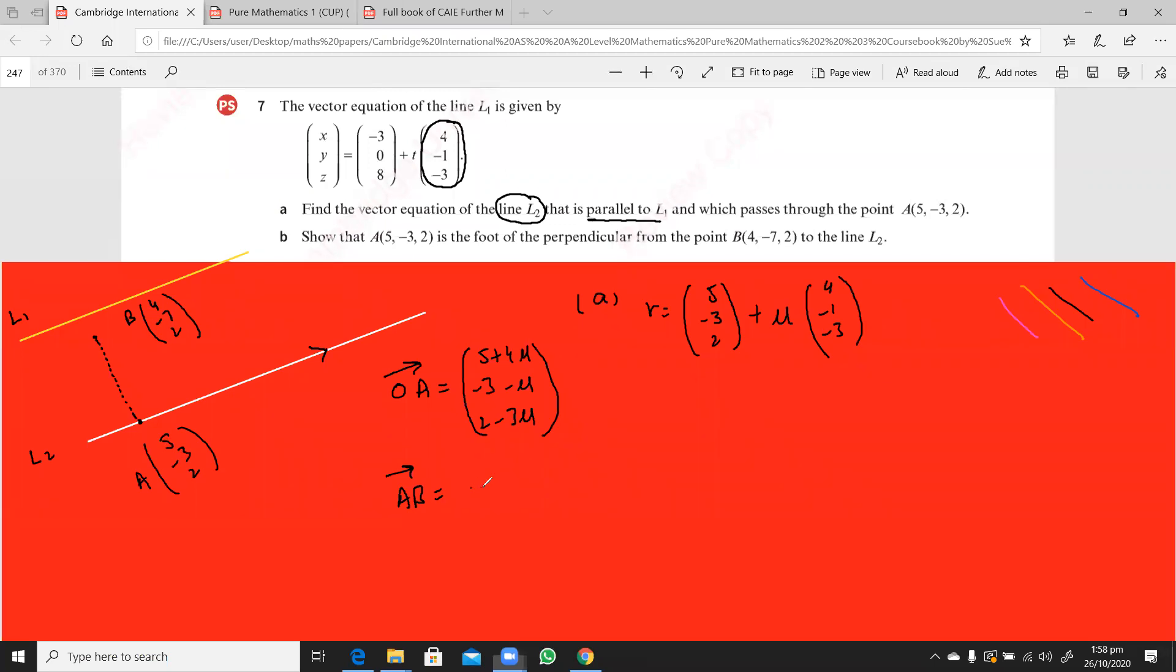So that is OB minus OA. So this is, OB is 4, minus 7, 2, and minus, this is 5 plus 4 mu, minus 3 minus mu, and we have 2 minus 3 mu.